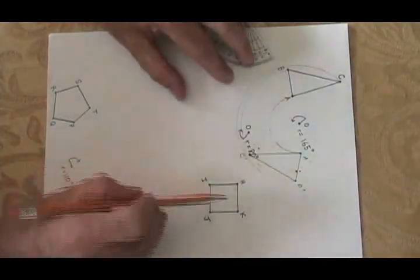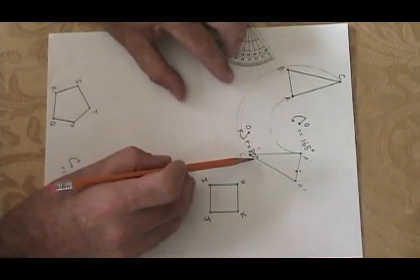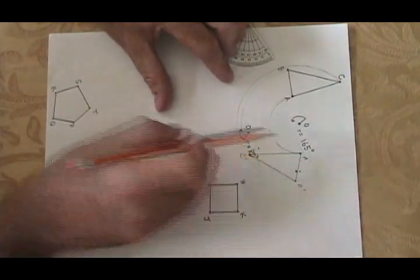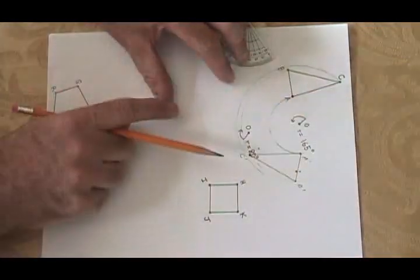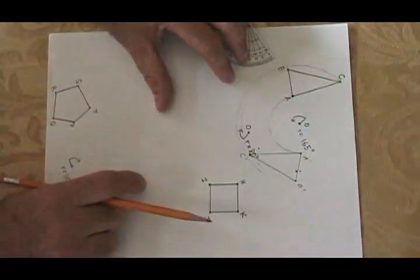Even though this notation which is for the next question sort of got in the way, you can still see that I have drawn a 165 degree rotation of this shape ABC. It's landed on A prime, B prime, C prime.